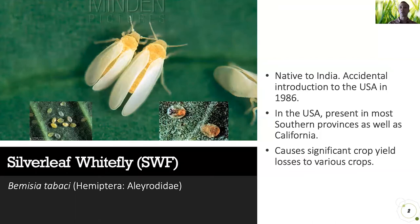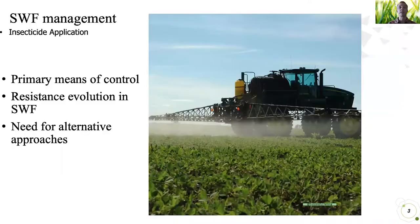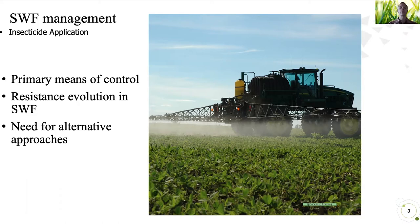Whiteflies have become quite a serious challenge in the southeast, and to combat this challenge, the current primary mode of action is to use insecticides. However, some of the insecticides have proven to lead to resistance in whiteflies, leading to some pretty nice ones being the insect growth regulators. However, there's still room for alternative approaches, and one that I'll talk about today would be better integration of biological control.